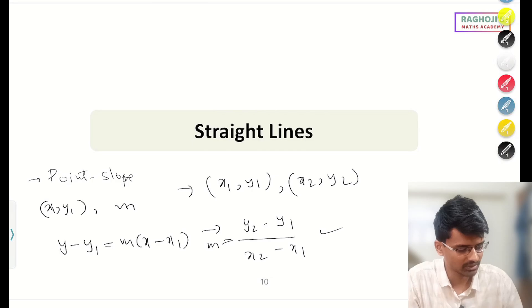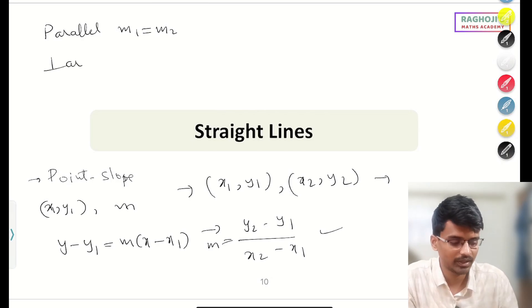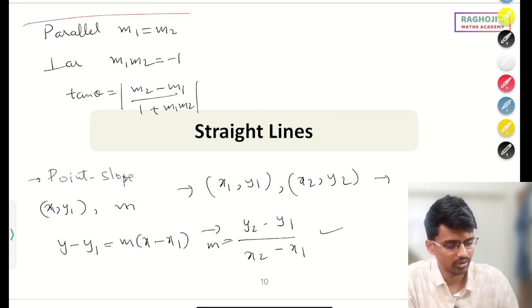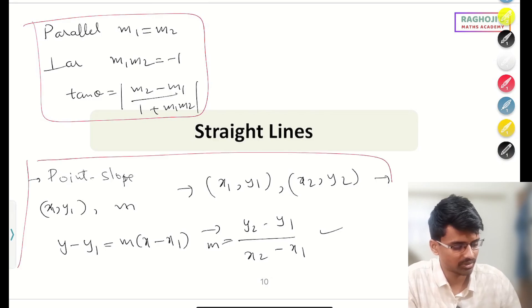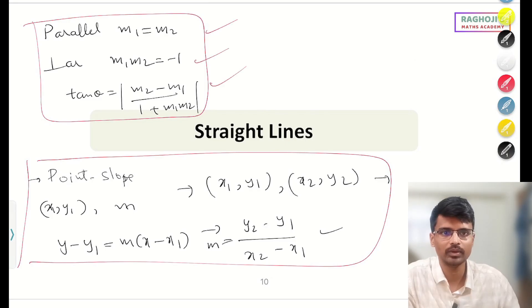This formula everyone remembers. Another important thing: if two lines are parallel, their slopes will be equal. If two lines are perpendicular, then m₁ × m₂ = −1. The angle between two lines is given by: tan θ = (m₂ − m₁) / (1 + m₁m₂). These formulas — point-slope form, finding slope from two points, parallel lines, perpendicular lines, and angle between two lines — are enough to get started with this chapter.